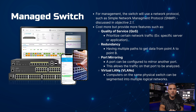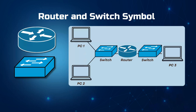Although managed switches may be more expensive, they offer additional features such as Quality of Service (QoS), redundancy, port mirroring, and VLANs. QoS is used to prioritize specific network traffic, for example a particular server or application. Redundancy provides multiple data paths from point A to point B. Port mirroring allows one port to replicate the traffic of another for analysis. VLANs enable segmentation of computers on the same physical switch into separate logical networks.